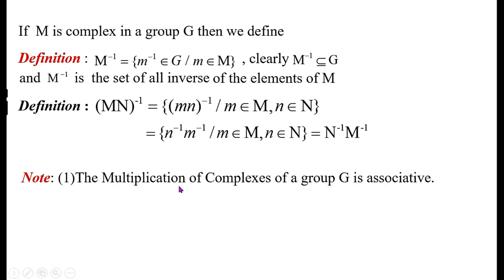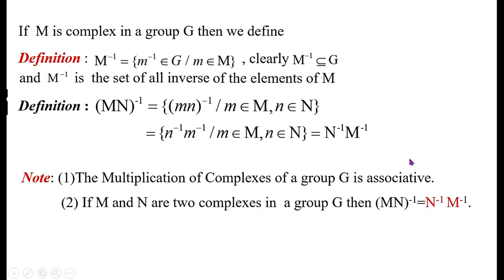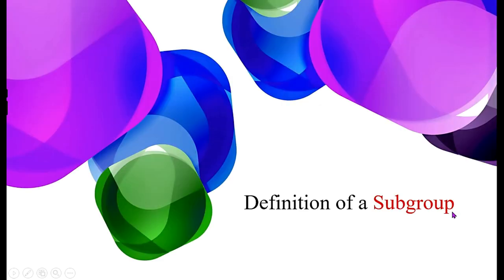The multiplication of complexes of a group G is associative. If M and N are two complexes in a group G, then (MN)⁻¹ = N⁻¹·M⁻¹.